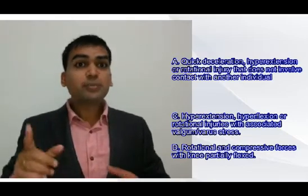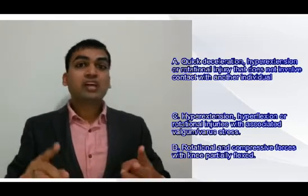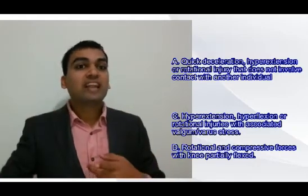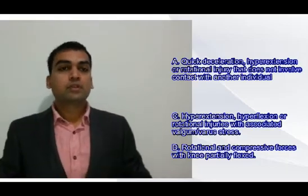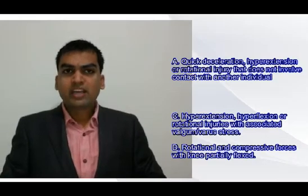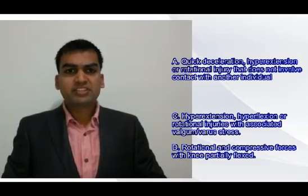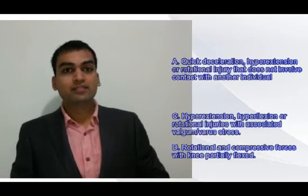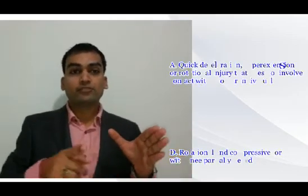Option C is a confusing option designed to mislead: the patient has hyperextension, hyperflexion, rotation, as well as varus and valgus forces. Is this the mechanism for ACL injury? Hyperextension and hyperflexion involve ACL and PCL, while varus and valgus forces are more related to LCL and MCL. This combination would not give you an isolated ACL injury — it would cause multiple ligament injuries simultaneously. So this is excluded.